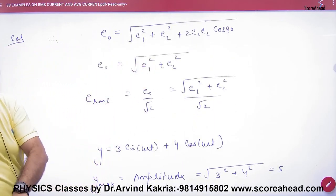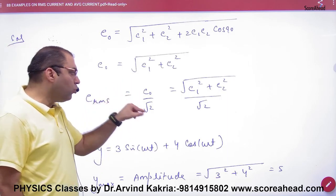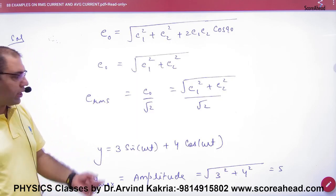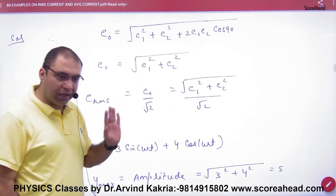If he asks, take out RMS value of this value, what does the maximum EMF have to give to root of 2? Divide. So we divide E₀ by root 2. Then what would the value be?